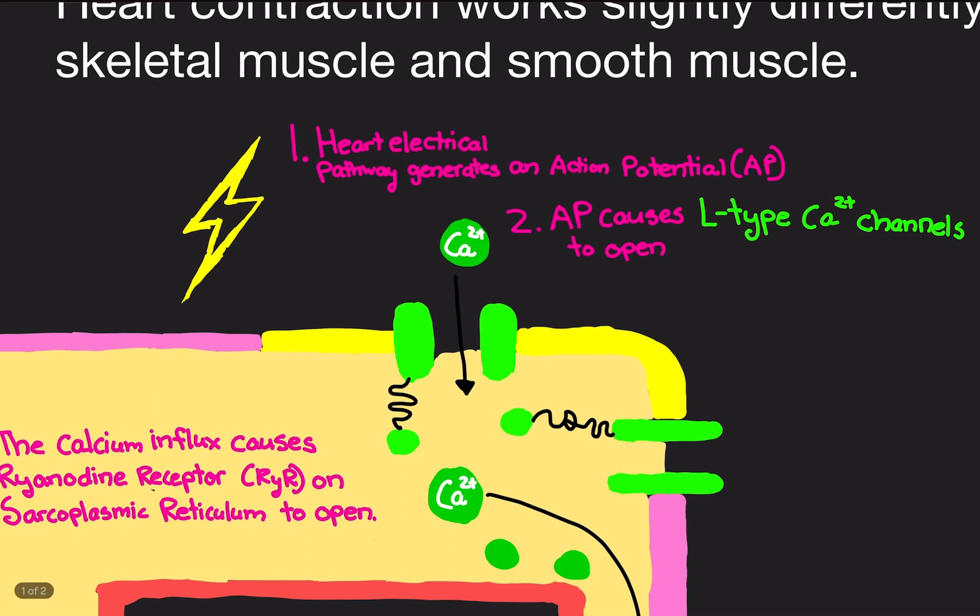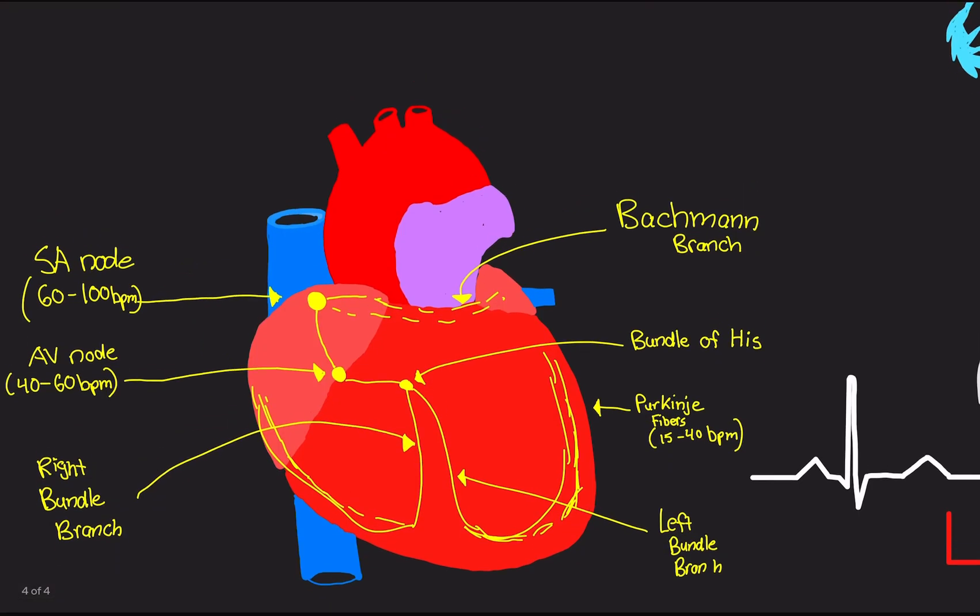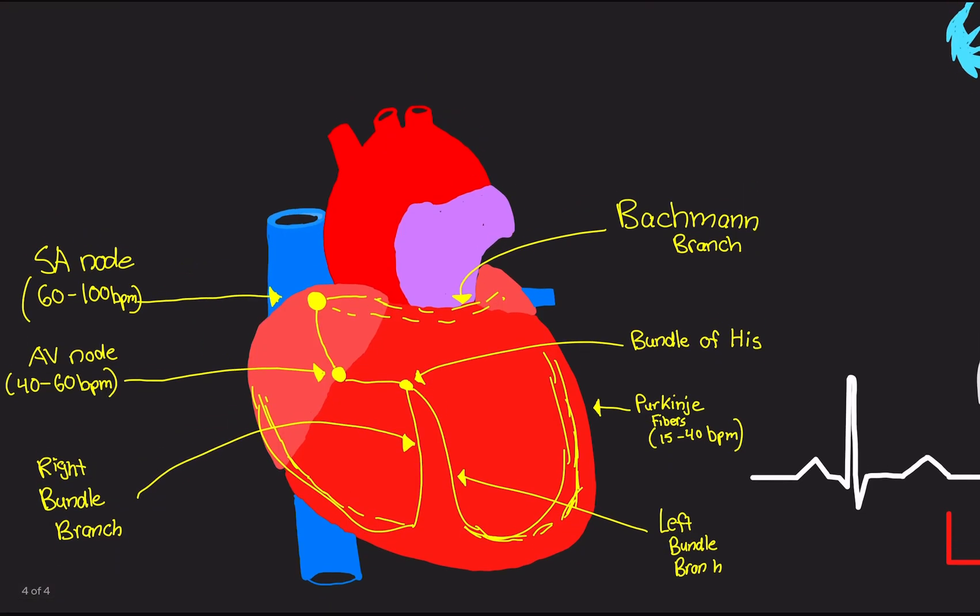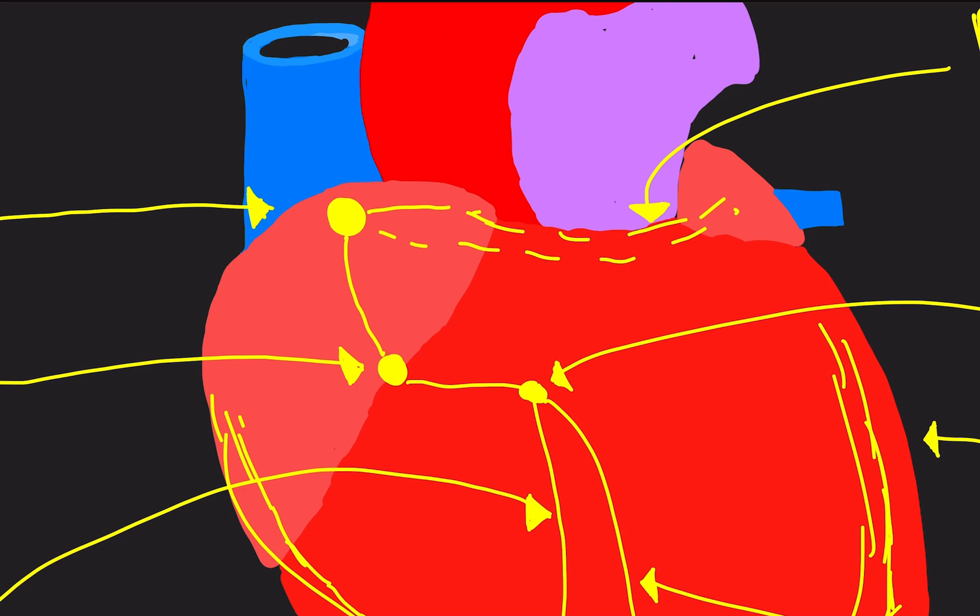The very first step is the heart electrical pathway generates an action potential. In the heart electrical pathway video I made, we went over that the SA node makes the electrical signal and it travels throughout the heart. The SA node fired and created an action potential. We're talking about any of the muscle cells anywhere around the heart. This pertains to any muscle cell in the heart that would receive an electrical signal from the SA node.